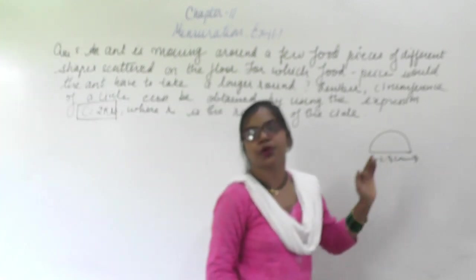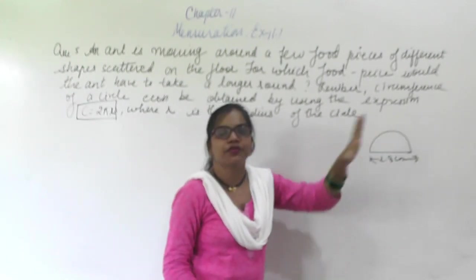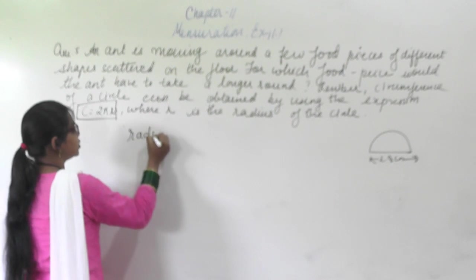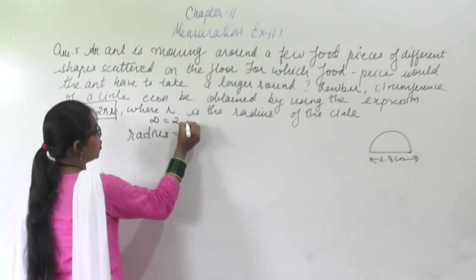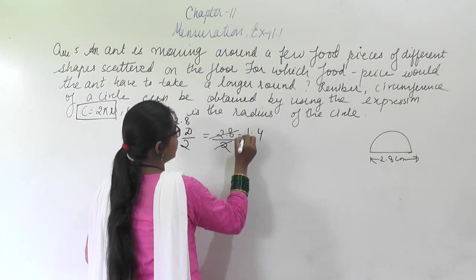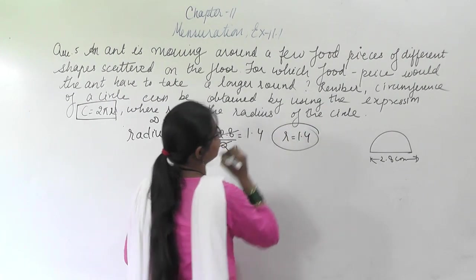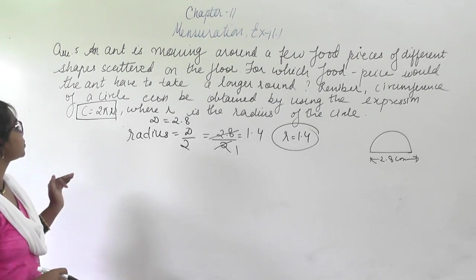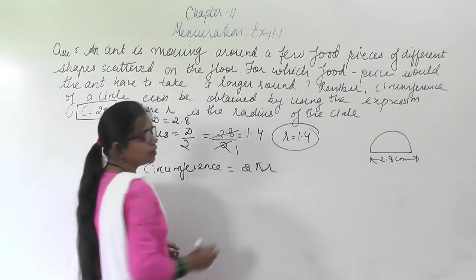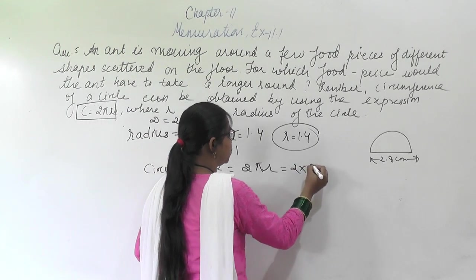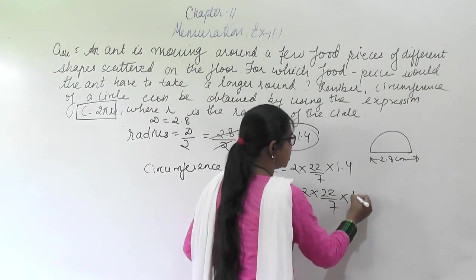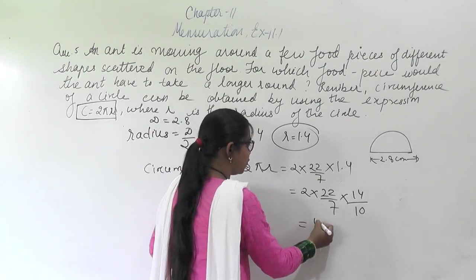A diameter of 2.8 cm is given for the semicircle. The radius equals diameter by 2, that is 2.8 by 2, which is 1.4 cm. The circumference equals 2 pi r: 2 into (22/7) into 1.4, which gives 4.4 cm.